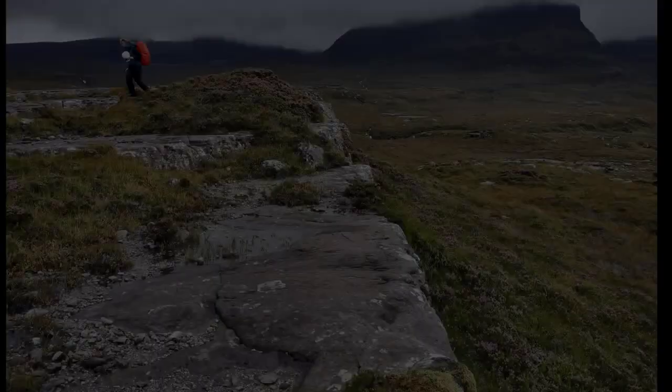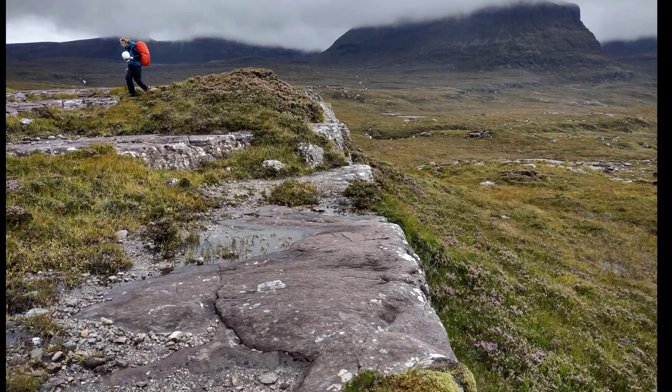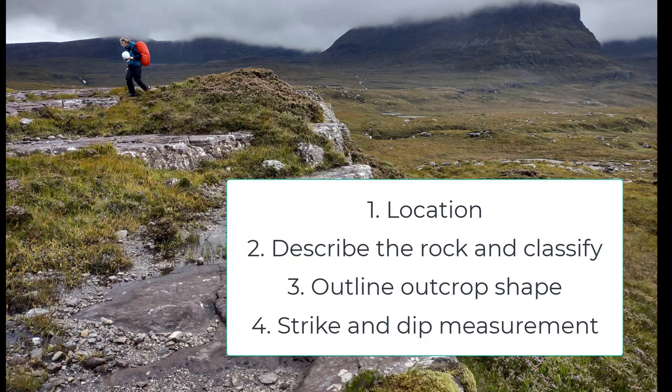I've now walked you through how to systematically make notes and produce a geological map outcrop in the field. First we worked out the location — where we were on the map. We then systematically described the rock and worked out what it was. Then we picked a colour and coloured in our outcrop, outlining it. Then we took a structural measurement and put that measurement on our map and in our field notebook.